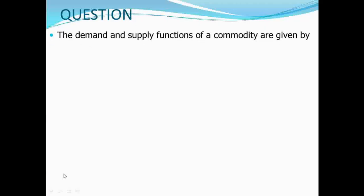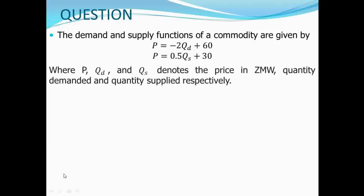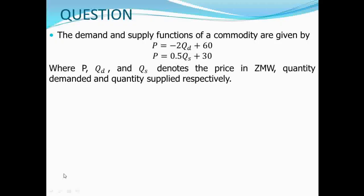The demand and supply functions of a commodity are given by P equal to negative 2QD plus 60, which is our demand function, and P equal to 0.5QS plus 30, which is our supply function, where P, QD, and QS denotes the price in Zambian Kwacha, quantity demanded, and quantity supplied respectively. In part 1 and part 2, we looked at the determination of the equilibrium price and the equilibrium quantity.